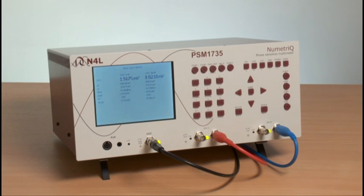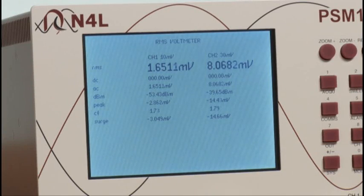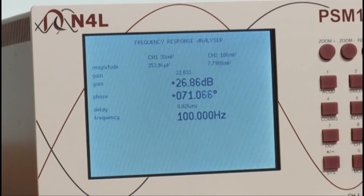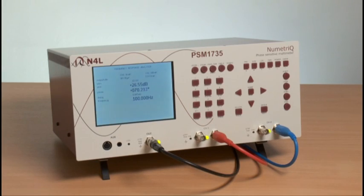If we now go to FRA mode, we can see that we have gain of 26 dB with 71 degrees phase angle at the injected frequency, which happens to be 100 Hz. This injection frequency can be changed during a sweep, but what we want to illustrate is that the gain phase plot is dependent not only on the frequency and injection signal level, but also the load of the power supply.